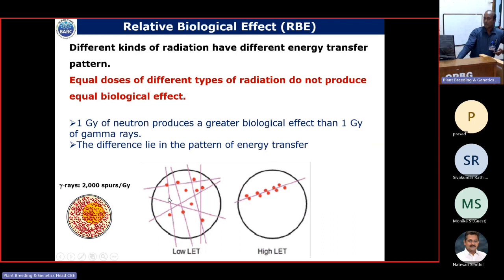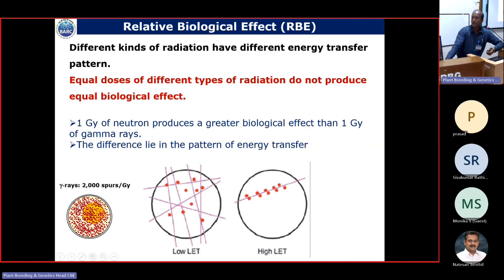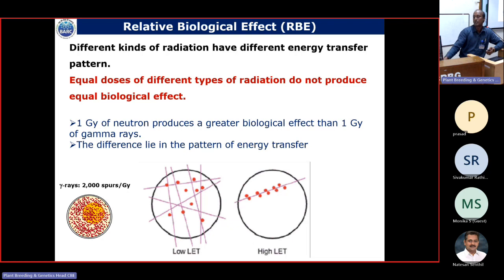Gamma rays are called low linear energy transfer (LET) radiations, and ion beams or electron beams are called high LET radiations. Equal doses of different types of radiation do not produce equal biological effects. Gamma rays and ion beams cannot produce the same biological effect because of their different properties. You can see how gamma rays irradiate a particular cell — the energy deposition is distributed throughout the cell, meaning more background damage can happen. That is, low LET radiation is spread throughout the cell, whereas in high LET radiation the energy deposition follows a specific path, and background damage is very much less.